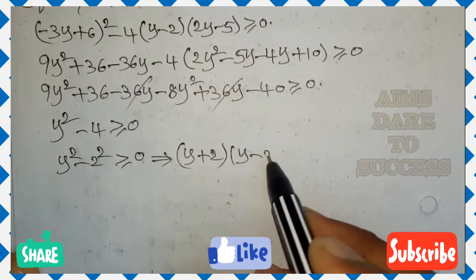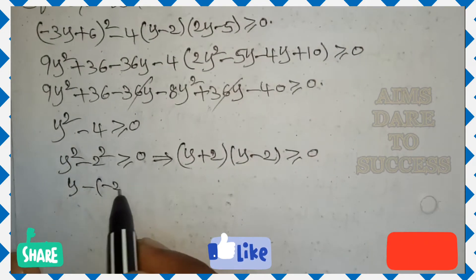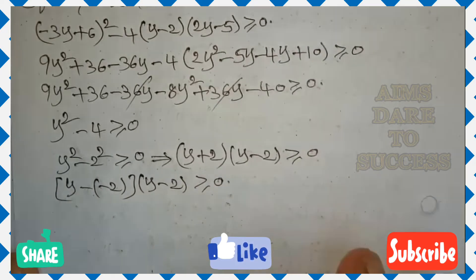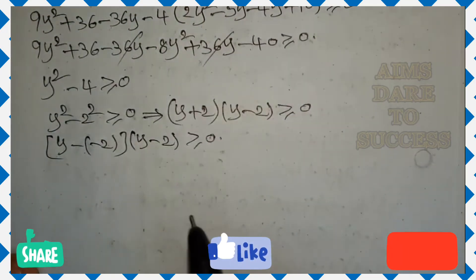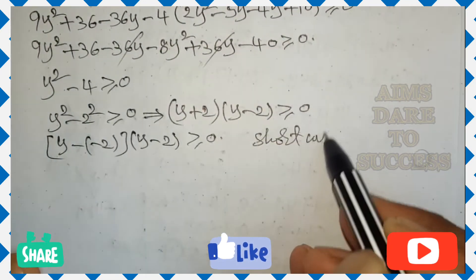This is look like a square minus b square can be written as a plus b into a minus b, that is y plus 2 into y minus 2 greater than or equal to 0. This can be written as y minus of minus 2 into y minus 2 greater than or equal to 0. So shortcut